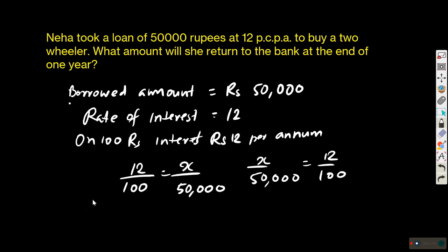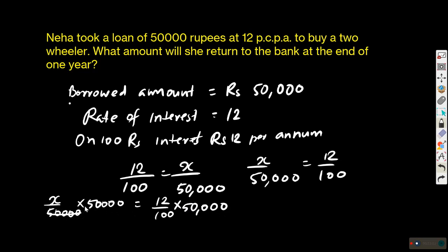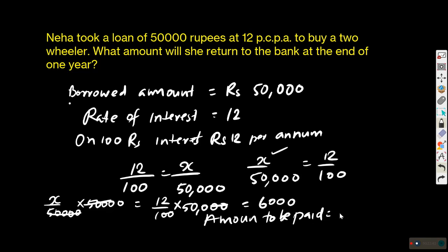The 50,000 on the left cancels, leaving X. On the right, 100 divides into 50,000 giving 500, and 12 into 500 equals 6,000. So X equals 6,000 — this is the interest to be paid in one year at 12% per annum. The amount to be paid by Neha is the loan amount plus interest: 50,000 plus 6,000 equals 56,000 rupees. We solved this using direct proportion.